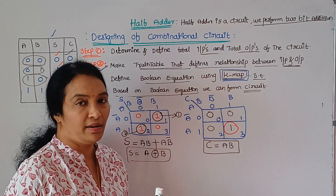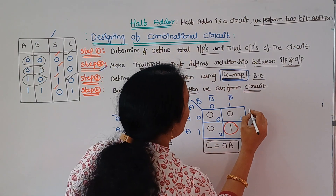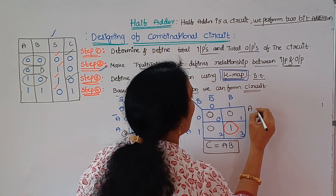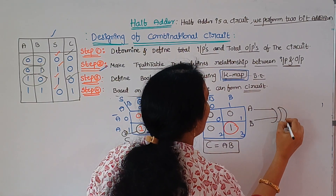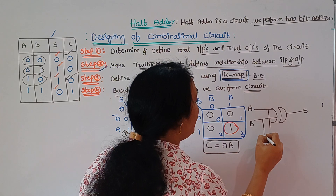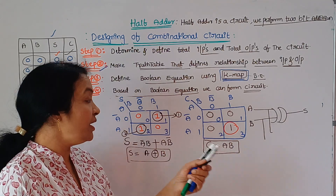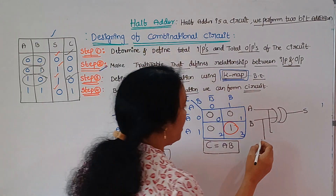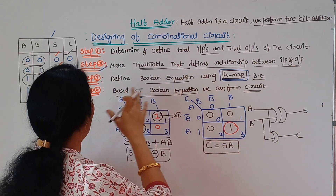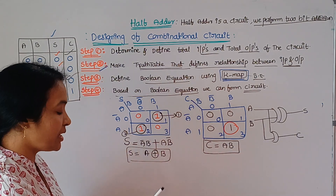This K-map gives us the Boolean equation. Now we draw the circuit diagram. The sum uses an Exclusive OR gate with two inputs A and B connected. The carry uses an AND gate with inputs A and B. This is the step-by-step circuit.